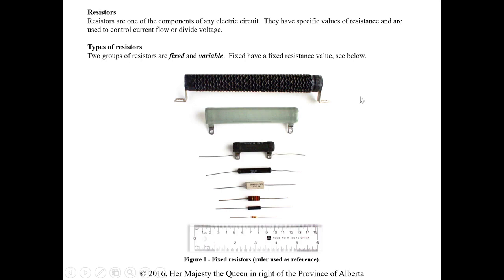Resistors are one component of an electric circuit. Specific values of resistance are used to control current flow or divide voltage. We saw that with our voltage divider — if we have a total resistance, we could get a percentage of each resistor and find the volt drop across that. So if you need to split up voltage in an electronic circuit, you can use resistors in series.